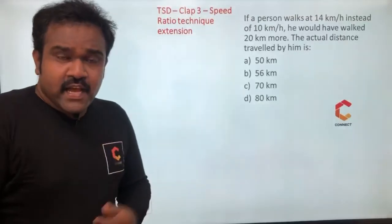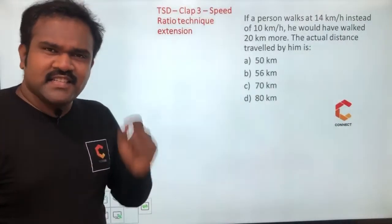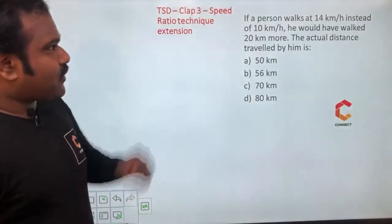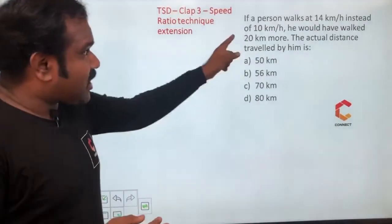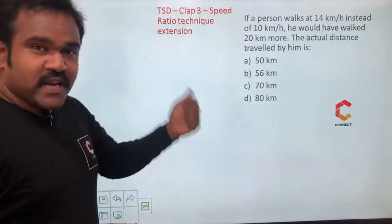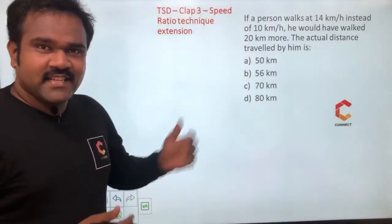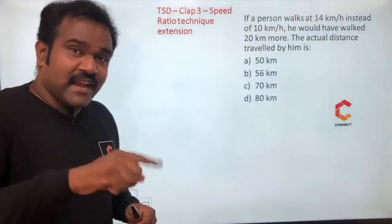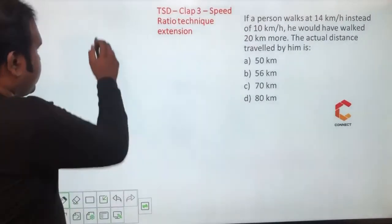In this class we'll see an interesting technique — a simple extension of the speed ratio technique. Look at the problem: if a person walks at 14 km per hour instead of 10 km per hour, he would have walked 20 kilometers more. So compared to the previous video, here they are comparing speed and distance. Previously we learned to compare speed and time taken; now speed and distance.